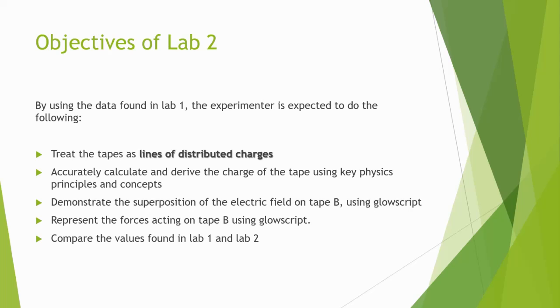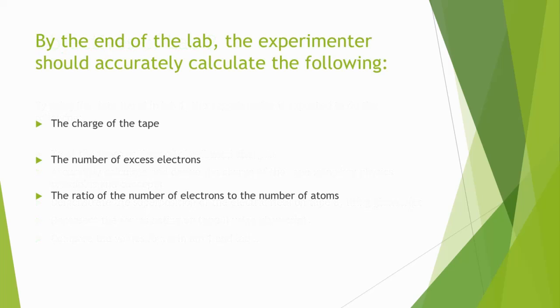Like lab 1, the experimenter expected to calculate the following by the end of the experiment: The charge of the tape, the number of excess electrons, and the ratio of the number of electrons to the number of atoms.